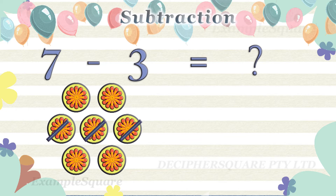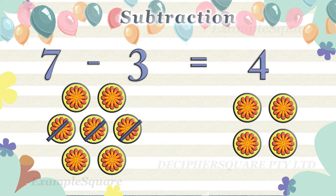If three stickers are taken away from seven stickers then four stickers are left. Seven minus three equals four.